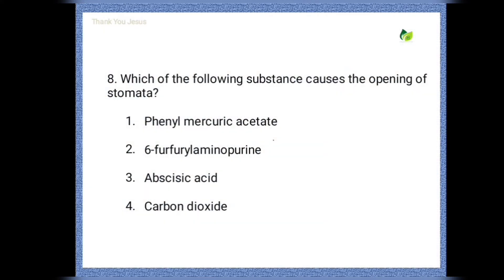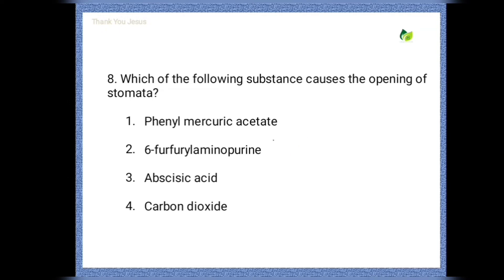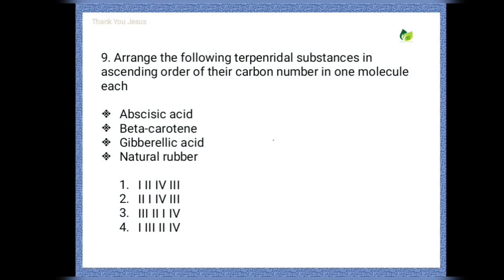Next question: Which of the following substances causes opening of stomata? Options are: phenyl mercuric acetate; 6-(4-furfuryl amino) purine (kinetin); abscisic acid; carbon dioxide. The correct option is 6-(4-furfuryl amino) purine.